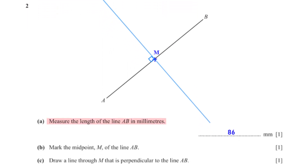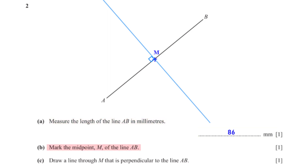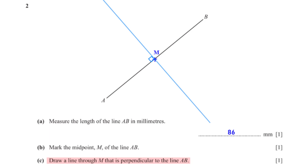Measure the length of the line AB in millimeters. When we measure the length of AB we get 86 millimeters. Mark the midpoint M of the line AB — on line AB we mark point M, which is half of 86, that is 43 millimeters from either point A or point B. Draw a line through M that is perpendicular to the line AB.